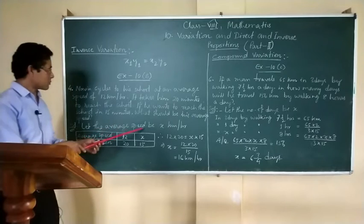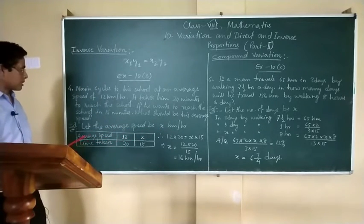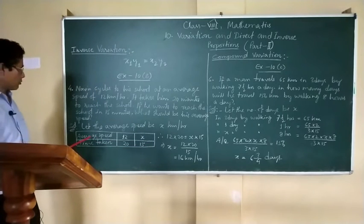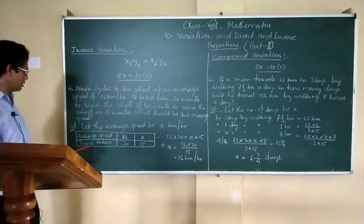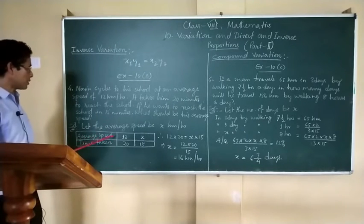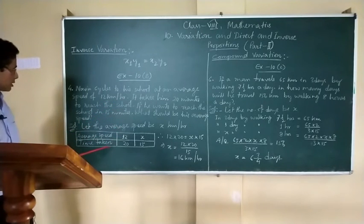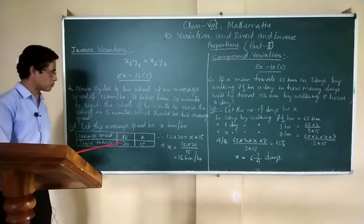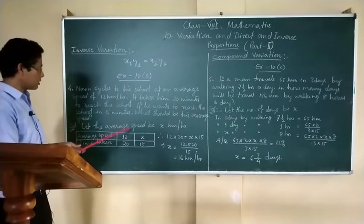Let the average speed be x km per hour. We will construct a table like this, where it will be average speed first and then time taken. With an average speed of 12 km per hour, it takes him 20 minutes to reach the school.